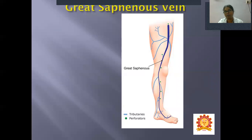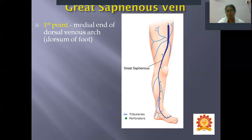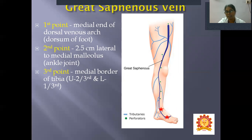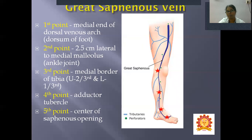The great saphenous vein: first point at the medial end of the dorsal venous arch; it then ascends in front of the medial malleolus, 2.5 cm lateral to the medial malleolus; then along the medial border of the tibia; then through the adductor tubercle; ascending along the medial side of the thigh towards the saphenous opening, it pierces the cribriform fascia and opens into the femoral vein.